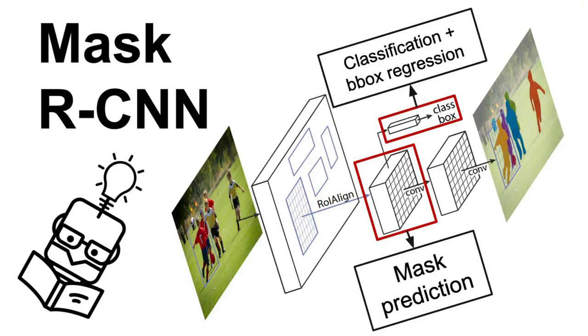Mask R-CNN is not a pure object detection model as the previous ones. Instead of predicting just a bounding box around the object of interest, it also predicts a mask, so it should be better categorized as an instance segmentation model. However, Mask R-CNN is strongly connected to the Faster R-CNN model, so I thought it would be a nice addition to the series.